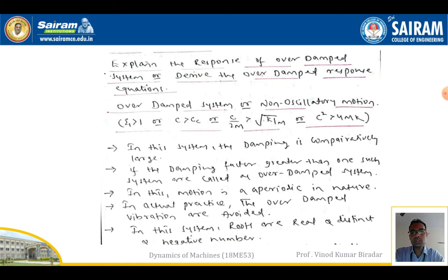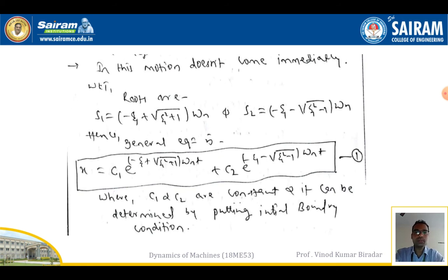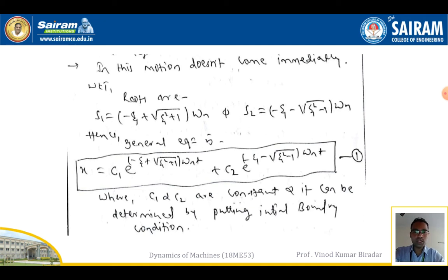If the zeta value is greater than one, such systems are called overdamped or non-oscillatory motion. The roots for the overdamped system are: s1 = (−ζ + √(ζ²−1))ωn and s2 = (−ζ − √(ζ²−1))ωn. The general solution is x = C1·e^(s1·t) + C2·e^(s2·t).